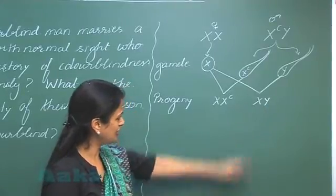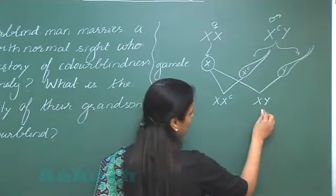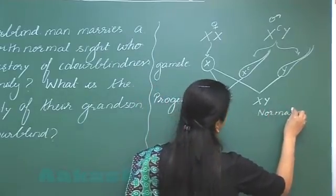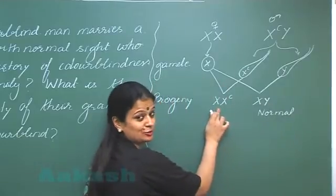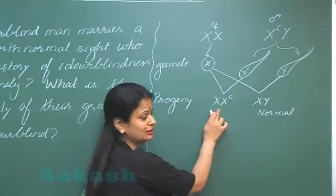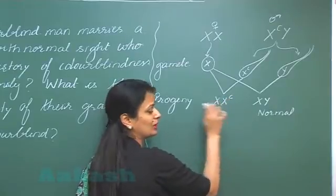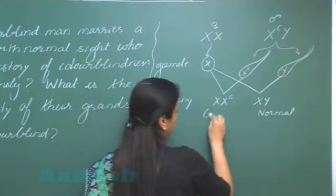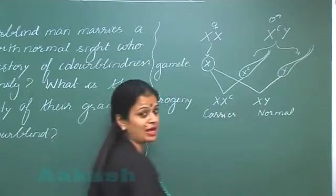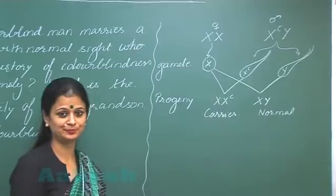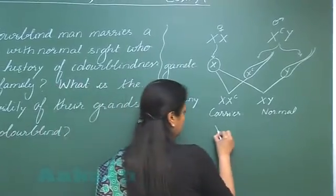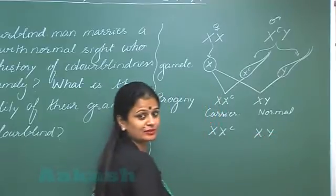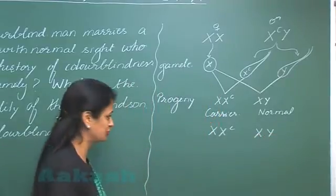Let's see what the condition is here. The son is normal. In the case of the daughter, there is presence of only one diseased allele. Such a female is known as a carrier female. Now if the carrier female marries a normal man, let's see what the progeny would be.